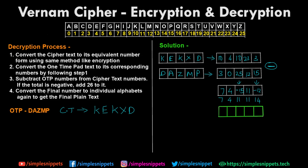The last step: convert the final numbers back to individual alphabets to get the plaintext. 7 is H, 4 is E, 11 is L, 11 is L, and 14 is O. We got back the word HELLO. The ciphertext was KEKXD and the plaintext recovered is HELLO, proving that the encryption and decryption process worked perfectly in the Vernam cipher when using this OTP.